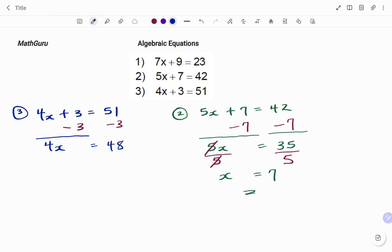And then the next step is to divide both sides by the coefficient of x, which is 4. So on my left-hand side, I divide by 4. 4 divided by 4 is 1, so I'm left with x equals 48 divided by 4, that's 12. So the value of x for this equation is 12.